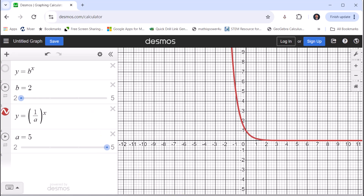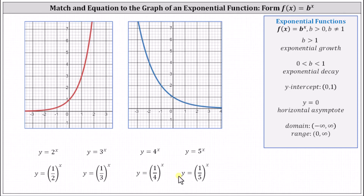Going back to our question, notice for all eight functions, when x is equal to zero, y is equal to one. In both graphs the y-intercept is the point zero comma one. We should recognize the red graph as an increasing function, and therefore we have exponential growth, so the equation must be from the first row. Let's find another point on the red function and determine which equation the ordered pair would satisfy.